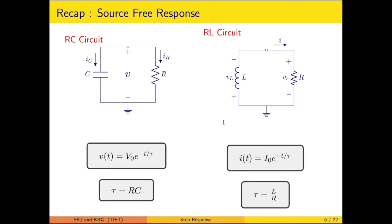Previously we discussed the free response characteristics, which are established solely by the initially charged value on the capacitor or the initial current in the inductor, with no external source present. This is why it is called the free response, governed by V(t) = V₀·e^(−t/τ) for the RC circuit and I(t) = I₀·e^(−t/τ) for the RL circuit, where τ = RC or τ = L/R respectively, representing the physical characteristics of the system.